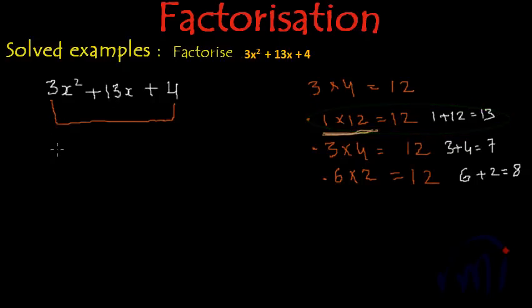So this polynomial can be written as 3x square plus 12x plus x plus 4.